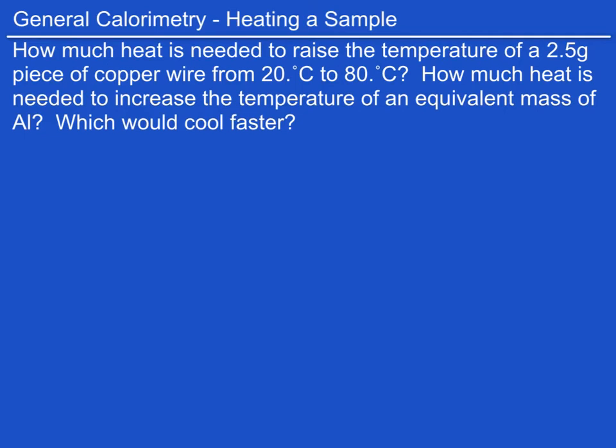In this problem we're looking at general calorimetry and in particular we're seeing the relationship between heat and how much it takes to heat up a sample. The question is how much heat is needed to raise the temperature of a 2.5 gram piece of copper wire from 20 degrees Celsius to 80 degrees Celsius, and also how much heat is needed to increase the temperature of an equivalent mass of aluminum. We'll assume it's the same temperature. And then the last question is which one would cool faster?